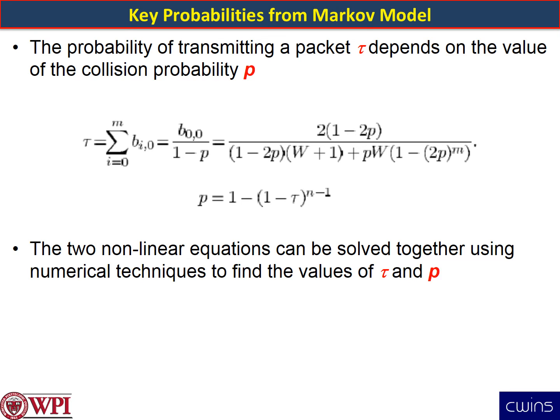The Markov model provides two probabilities: tau and P. The probability tau actually depends on the collision probability P. From the Markov model you get two non-linear equations for tau and P, and for different numbers of nodes N you can solve these equations numerically using a non-linear solver. In the class handout, the default MATLAB solver was used, and you could also apply methods such as Runge-Kutta.